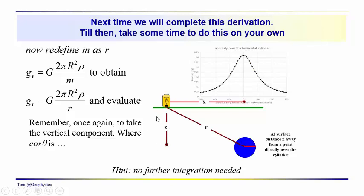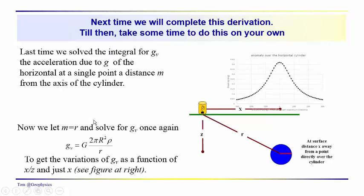R equals m equals the distance from the point of observation to the center of the cylinder at depth Z. Previously we took the vertical component for differential volume elements going in and out along the length of the cylinder. Now we have to take the vertical component as we go across it, so we'll scale this with a cosine theta term. Next time we'll complete this derivation.